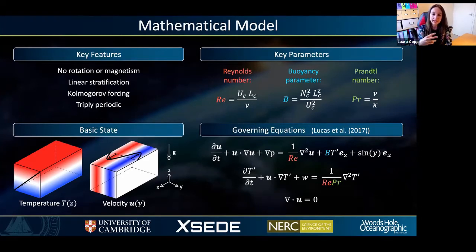Within this model, after non-dimensionalizing, it turns out that there are three key parameters: the Reynolds number shown in red, the buoyancy parameter B in blue, and the Prandtl number in green. The governing equations can be written as shown at the bottom of this slide for the three-dimensional velocity field u and temperature perturbations t' away from the background state. It's worth mentioning that the product of the Reynolds number and the Prandtl number is often referred to as the Péclet number, shown in purple. So the equations can alternatively be written in terms of the Péclet number.